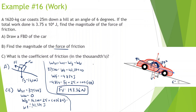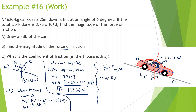Now it asks for the coefficient of friction. Force of friction equals normal force times mu. We need to find the normal force from the y-component of gravity: 16,200 times cosine of 6, which gives 16,111 N. So 193.36 equals 16,111 times mu. Therefore mu equals 0.012.